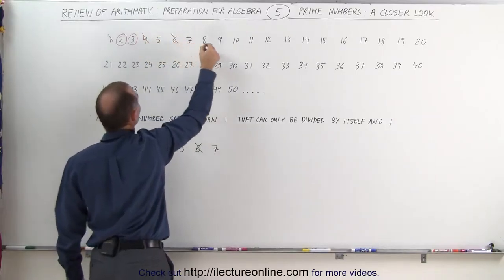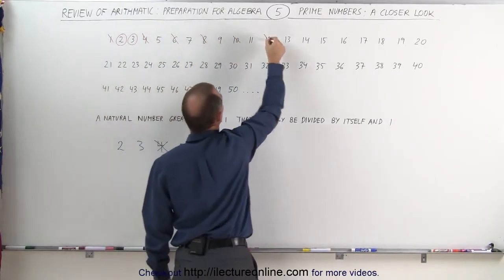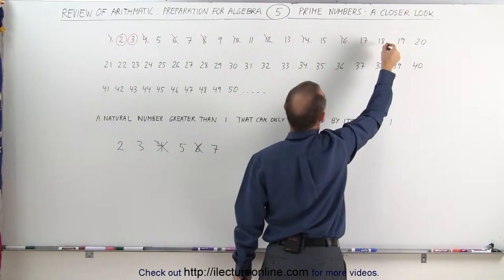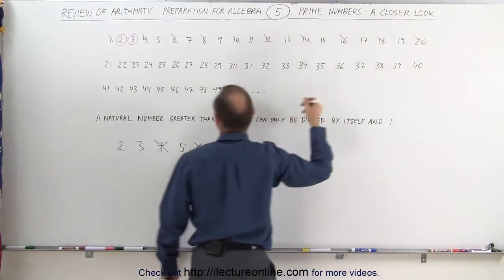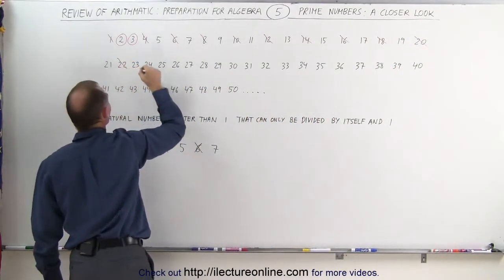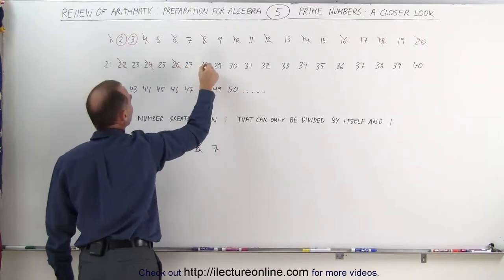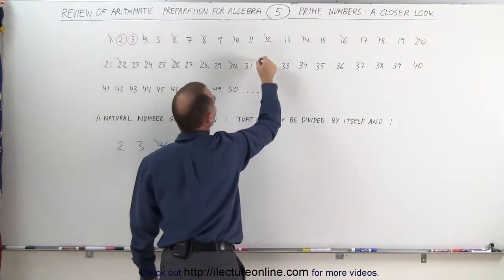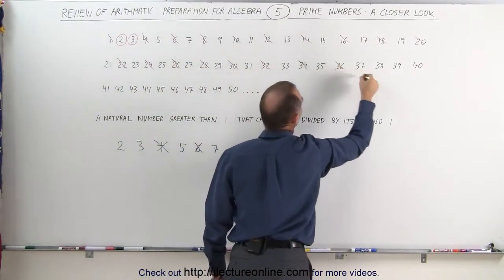So 4 is not, 6 is not, 8, 10, 12, 14, 16, 18, and 20. That already eliminates half of all the numbers — they simply cannot be prime numbers because they can all be divided by 2.